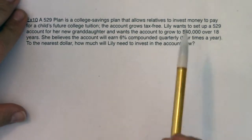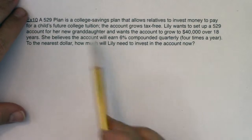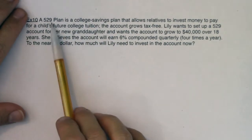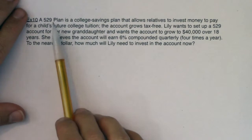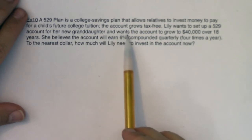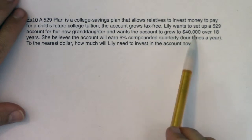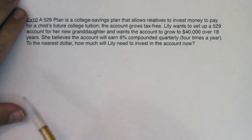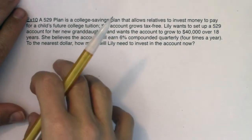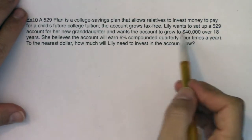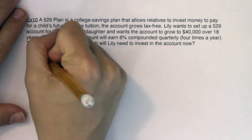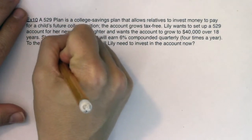This is a slightly different question, but let's see if we can figure out what numbers I gave you. Lily's going to do some sort of 529 plan — a college savings plan for her granddaughter. She wants the account to grow to $40,000. On the back end of things, she wants her granddaughter to have $40,000 in 18 years. So this $40,000 is actually my A value this time out.